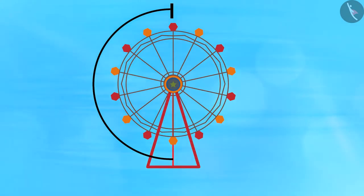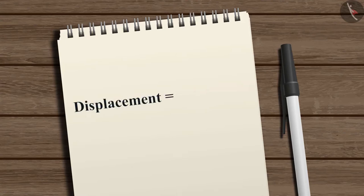Can you find out what your displacement from the initial position is? Here, displacement is equal to the diameter of the giant wheel.